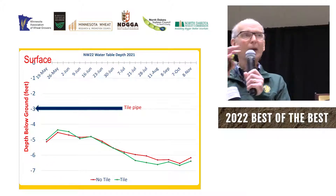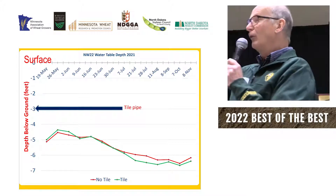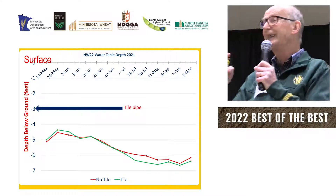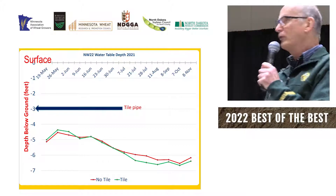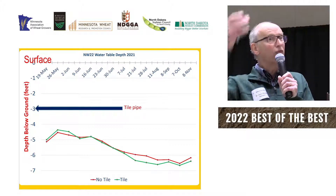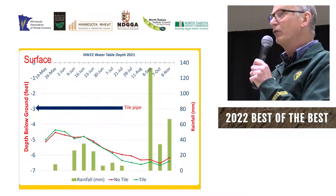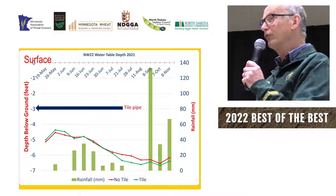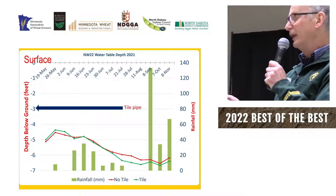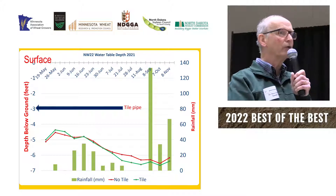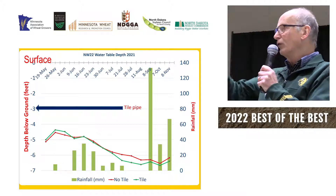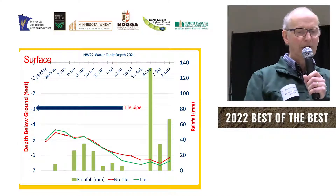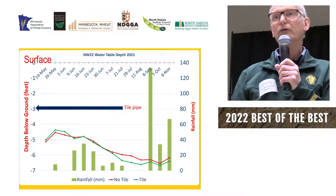I have two lines — one indicating where there was tile and one where there was no tile. The conclusion is it didn't make a difference last year because we were in a drought situation and the tile never ran. Over time in June and July the water table dropped quite substantially because the crop is utilizing the moisture. The green bars indicate rainfall. We didn't get rain too late in the season, and the water table only slightly comes up at the end of the season.